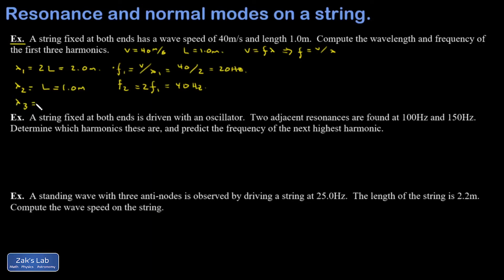Lambda three, that's the one where we had one and a half wavelengths fitting on the length of the string. So lambda three was two L over three and that's two times one over three or two thirds or approximately 0.667.